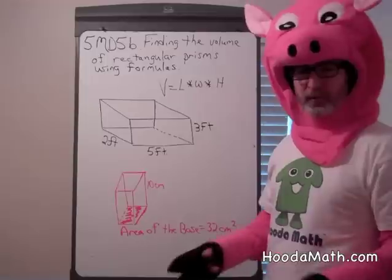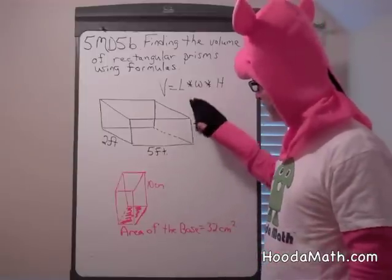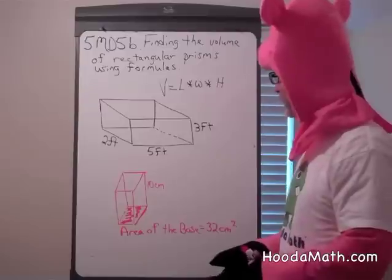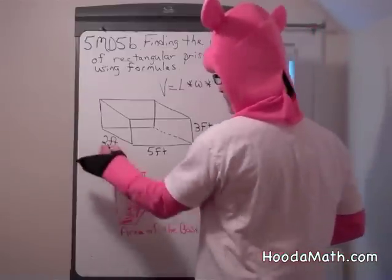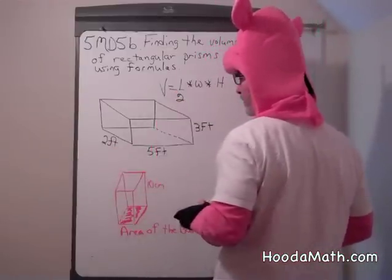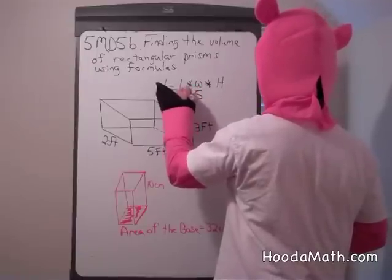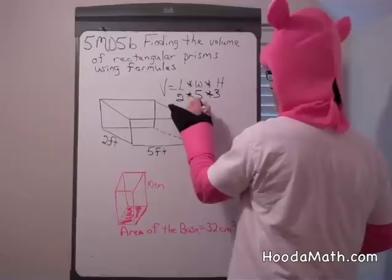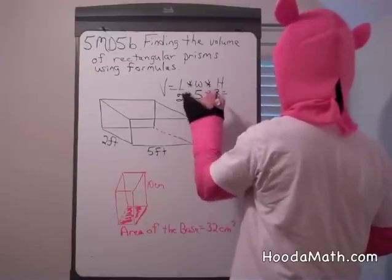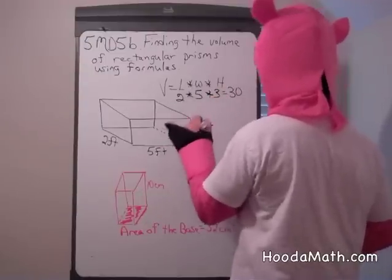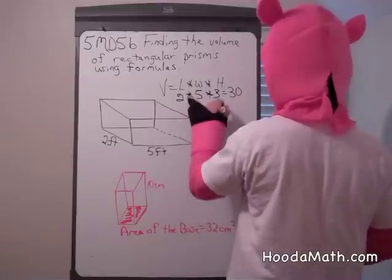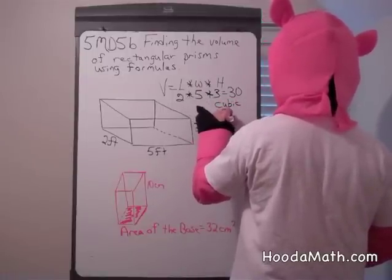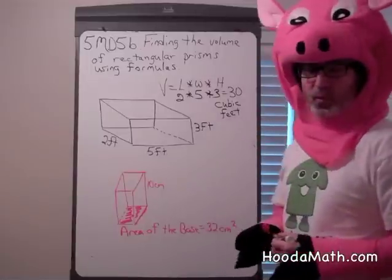We want to know what the volume would be if we filled this tank to the top with water. You would just substitute: length is 2, width is 5, and the height is 3. 2 times 5 is 10, times 3 is 30 cubic feet. That is the volume to fill this tank with water.